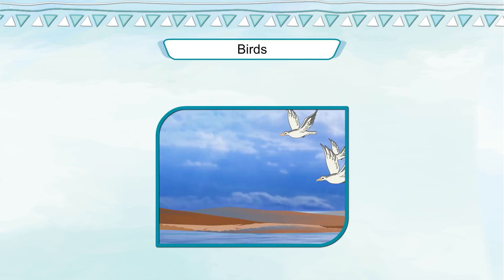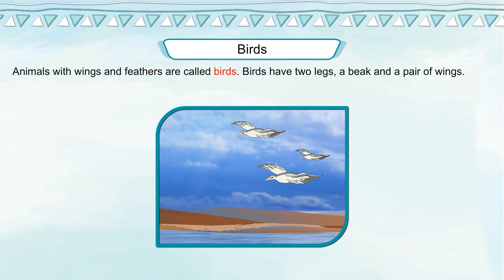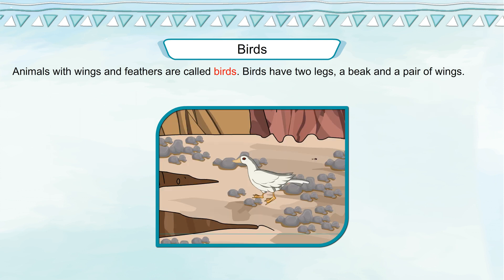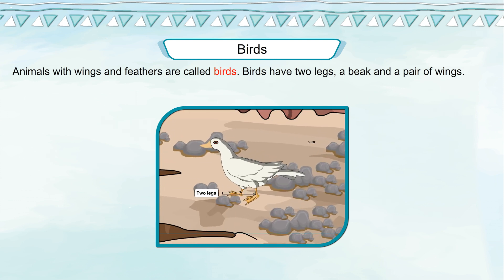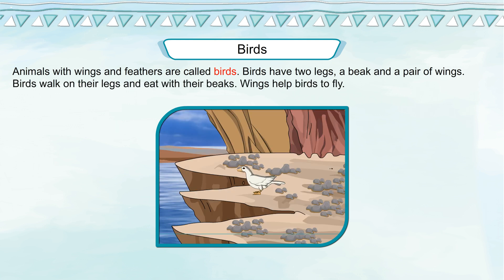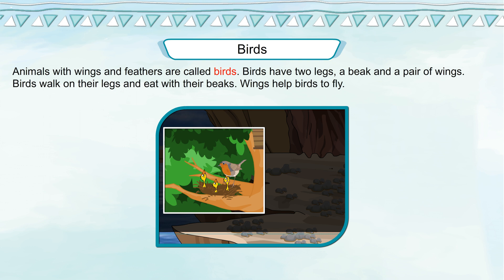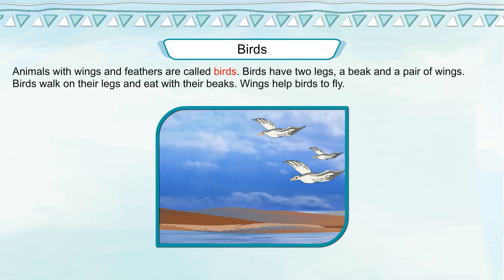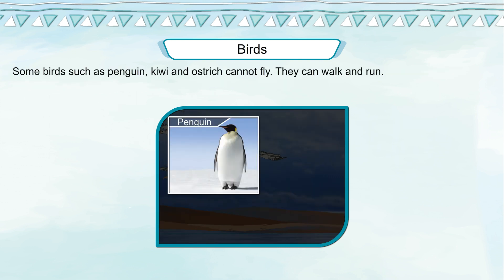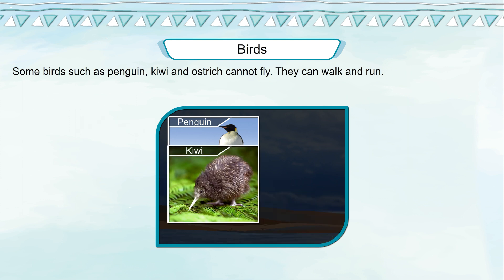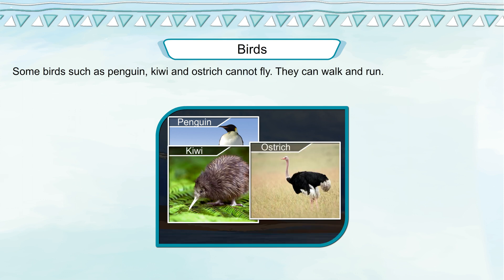Birds. Animals with feathers are called birds. Birds have two legs, a beak, and a pair of wings. Birds walk on their legs and eat with their beaks. Wings help birds to fly. Some birds such as penguin, kiwi, and ostrich cannot fly.